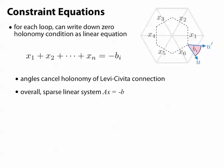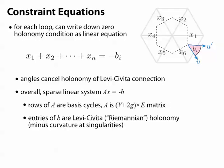So we can write down one of these linear equations for each loop in our basis, and we end up with a sparse linear system Ax equals negative b, where the rows of A are basis cycles, and the entries of b give the holonomy from Levi-Civita minus whatever curvature we put at the singularities.